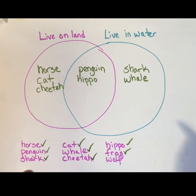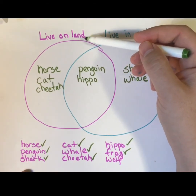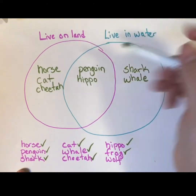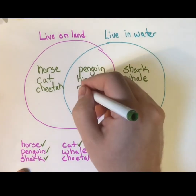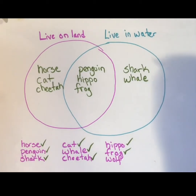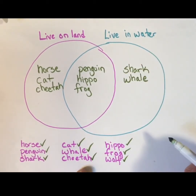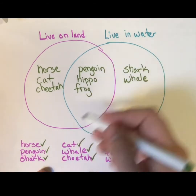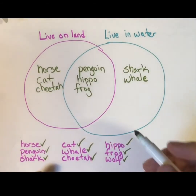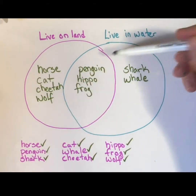Frog — another tricky one. I've seen frogs in the water, but I also know there are things like tree frogs, and I've seen frogs on land. So frogs live in both. In fact, for part of their life cycle they're only in the water, and part of their life cycle they're only on land. Wolf — wolves are usually seen on land. They'll swim, but like the horse, they don't live in the water.